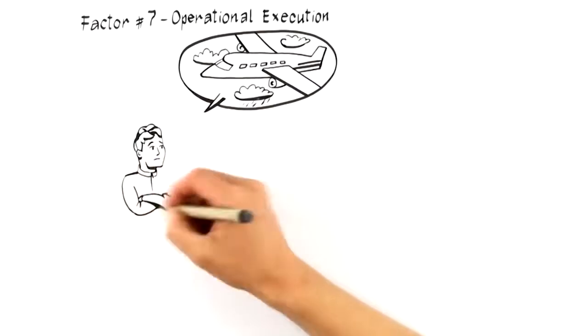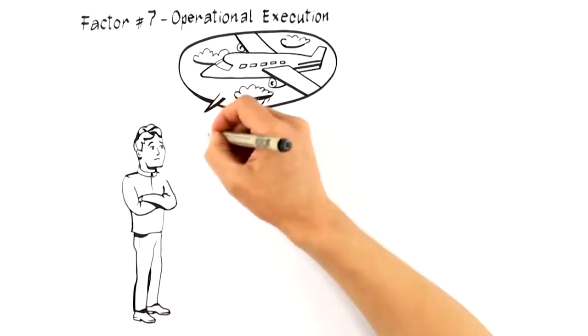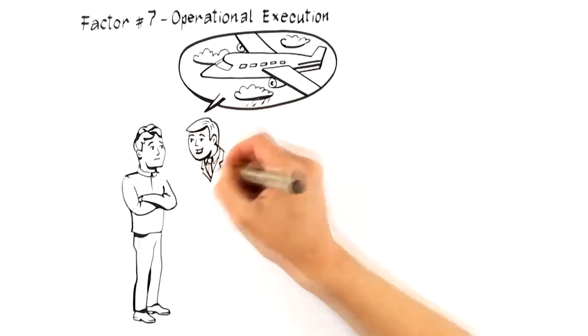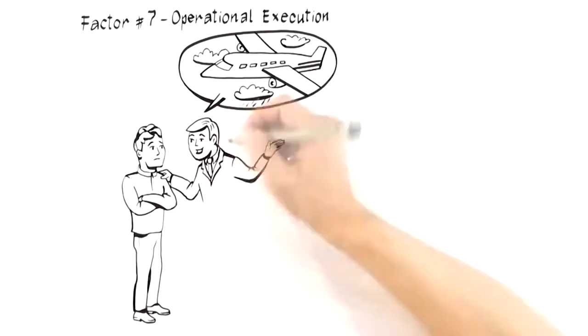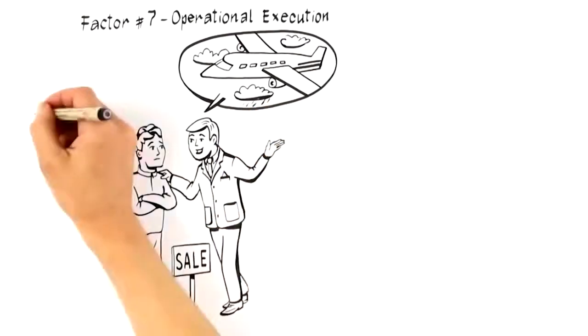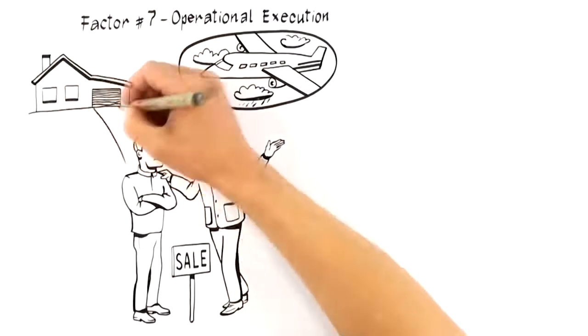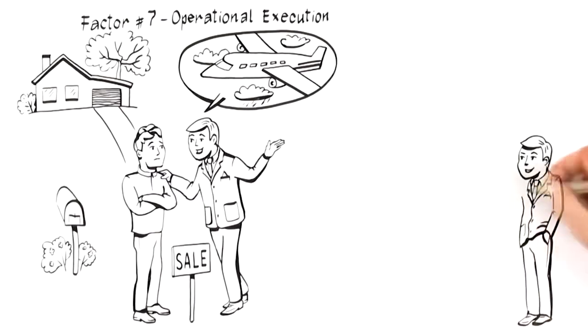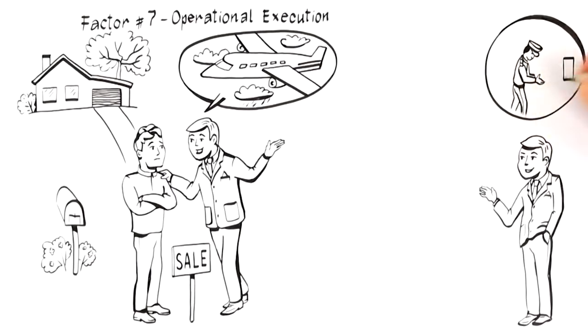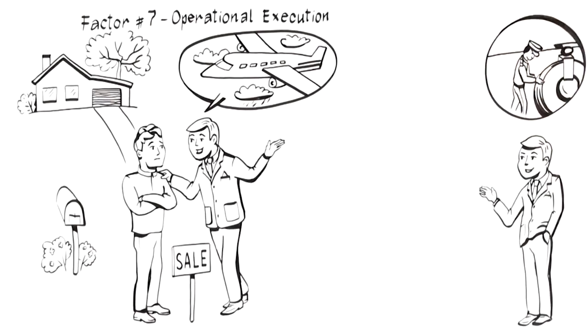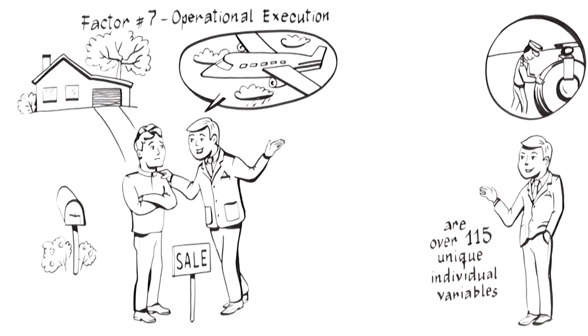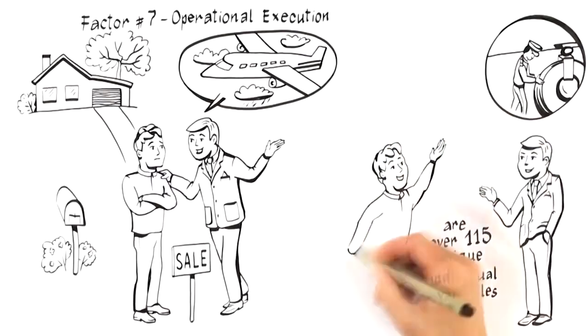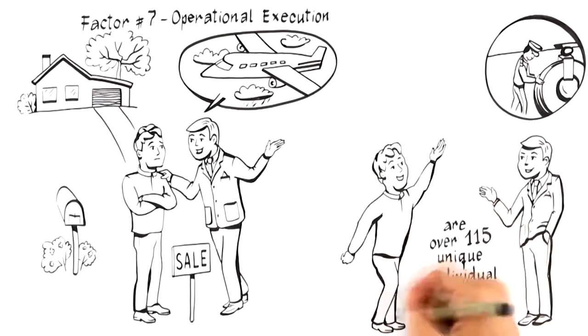The sale of your home is much like flying in an airplane. You want an expert in the cockpit who's flown hundreds of times and follows a set of documented processes to get your plane safely into the air and back on the ground again. You would never want your pilot to be the person who is checking the air in the tires, fueling the plane, washing the windows, or serving drinks up and down the aisle. And because there are over 115 unique individual variables that go into the successful sale of every home, you don't want an agent who doesn't have systems and relationships in place to manage the process.